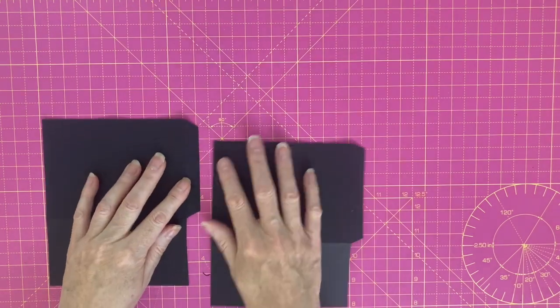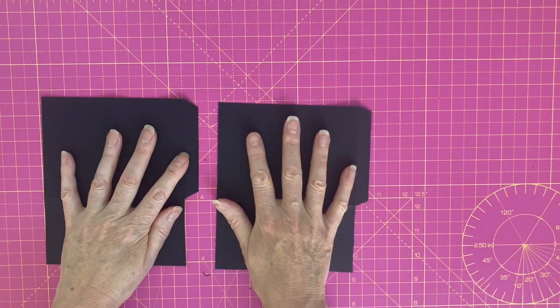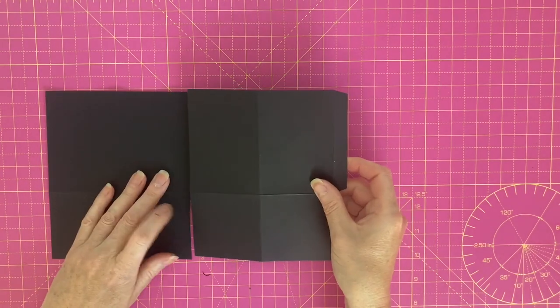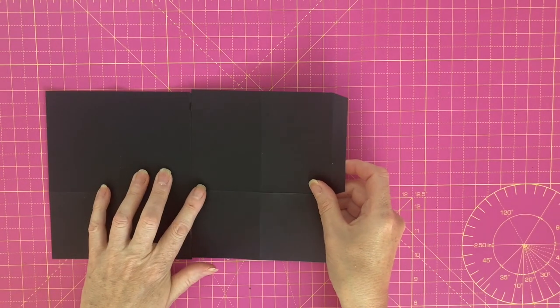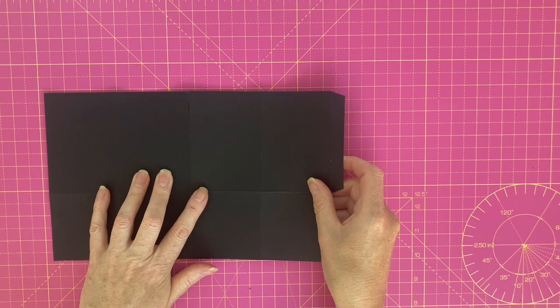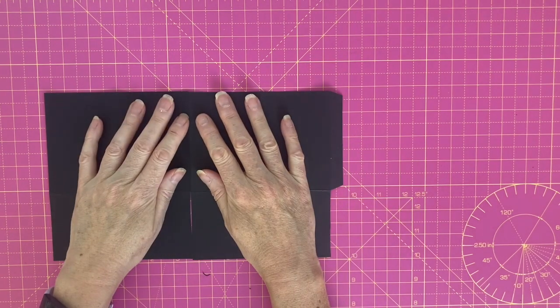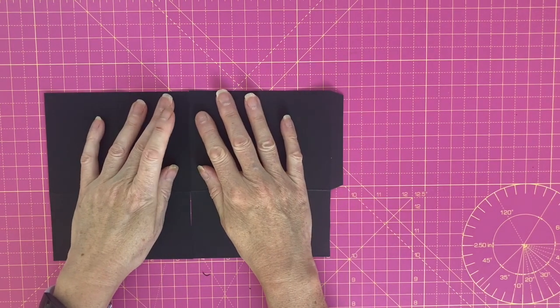We're now going to add glue to this tab and join the two pieces together. I'm going to pay particular attention to lining up the bottom score lines because you can always trim the top edge if you need to.